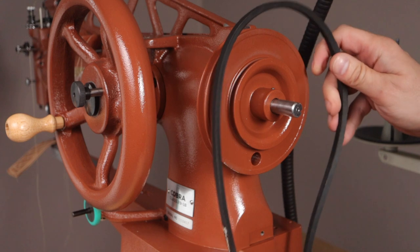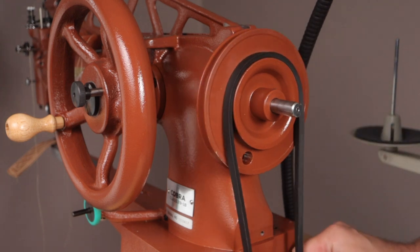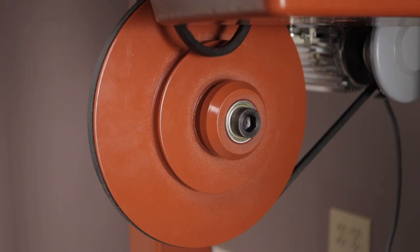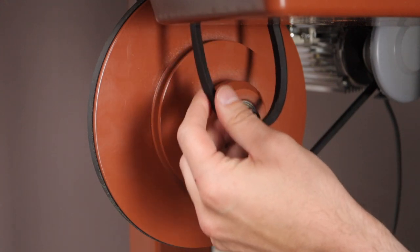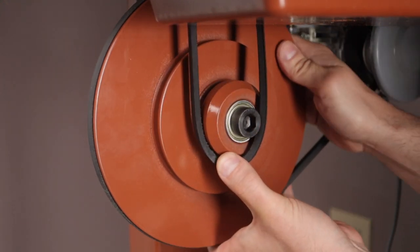To add the belt to the machine, you want to make sure it sits on the outside small grooved wheel. When attaching to the speed reducer, you want to rotate the speed reducer so that the belt fits into the small grooved area.